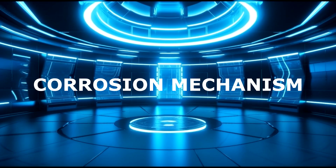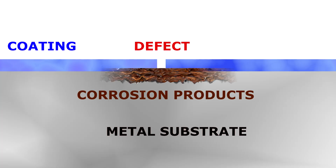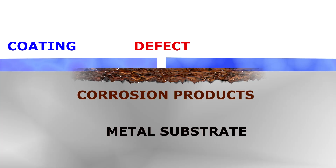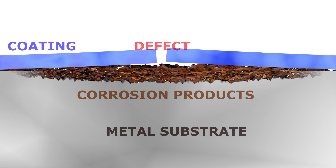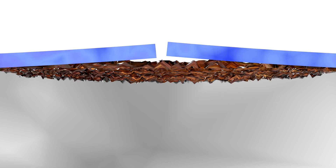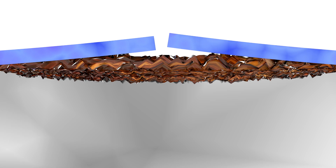Filiform corrosion is a type of corrosion that occurs beneath a coating. This type of corrosion starts at imperfections or defects in the coating where corrosive species can reach the metal substrate and form corrosion products. The propagation of corrosion under the coating causes it to lift, as the corrosion products take up more space than the original metal.